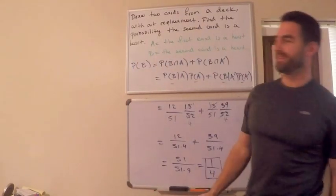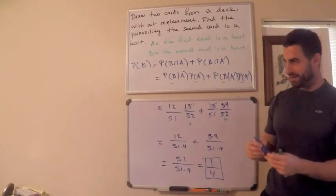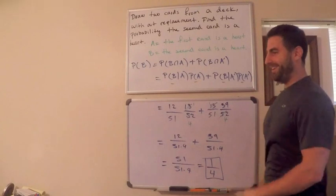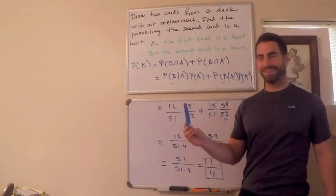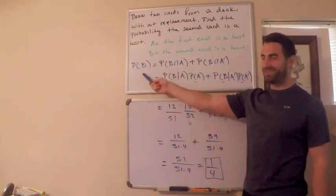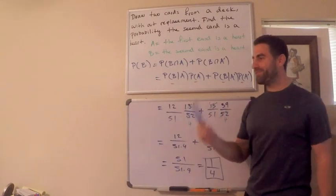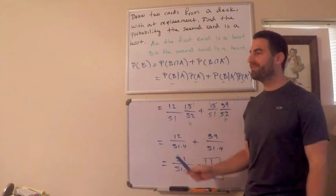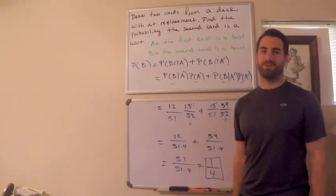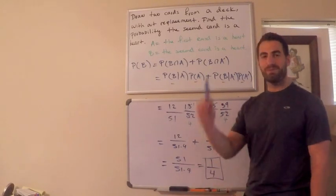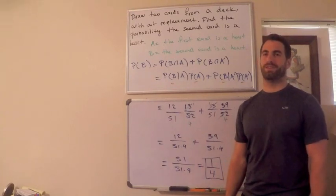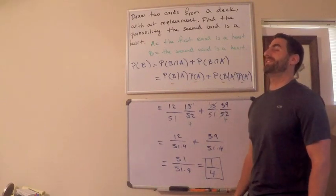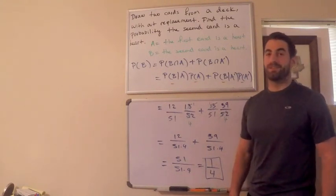The probability that the second card is a heart is 1/4. What's surprising is that the probability of drawing a heart to begin with is also 1/4. The probability the first card is a heart is 1/4, and the probability the second card is a heart is also 1/4. That's a remarkable result.